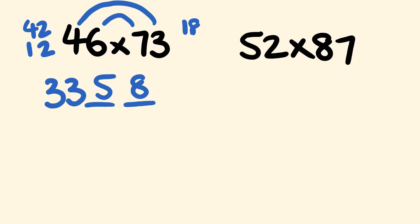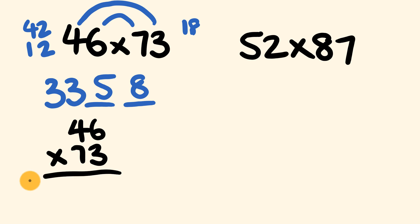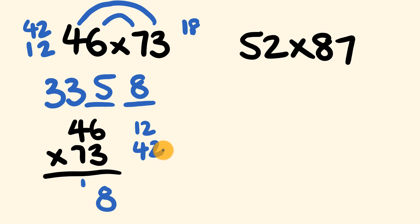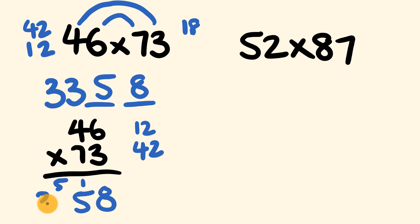Let's verify with cross multiplication on 46 multiplied by 73. Units: 6 times 3 is 18, carry the 1. Tens cross: 4 times 3 is 12 and 6 times 7 is 42 — adding to 54, plus the carried 1 is 55, so 5 down and carry 5. Hundreds: 7 times 4 is 28 plus 5 equals 33. Answer: 3358 — confirmed. This method is a lot less messy.